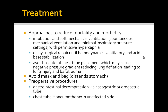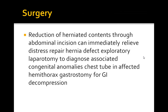For preoperative procedures, ensure a chest tube is placed if there is a pneumothorax on the unaffected side, and perform gastrointestinal decompression via nasogastric or orogastric tube. Surgery involves reduction of the herniated contents through an abdominal incision, which can immediately relieve distress, and repairs the hernia defect via exploratory laparotomy to diagnose any associated congenital anomalies. A chest tube in the affected hemithorax can help, and a gastrostomy may be developed for GI decompression.